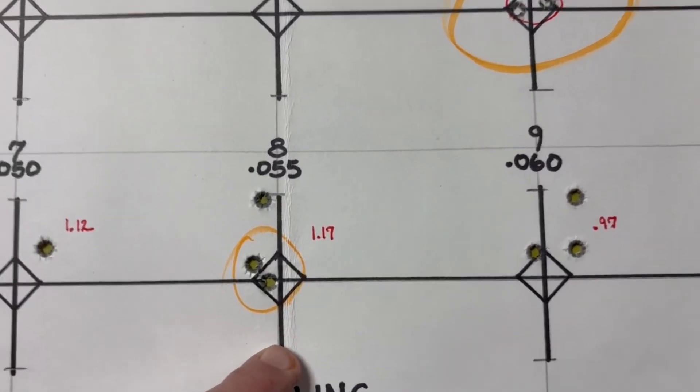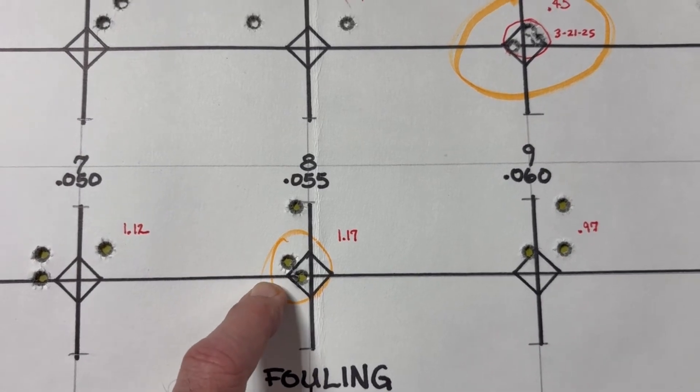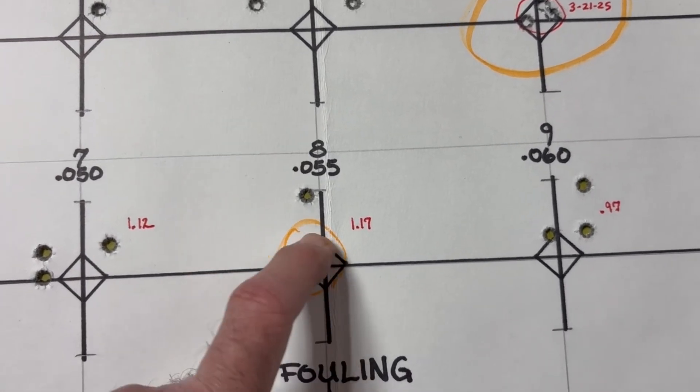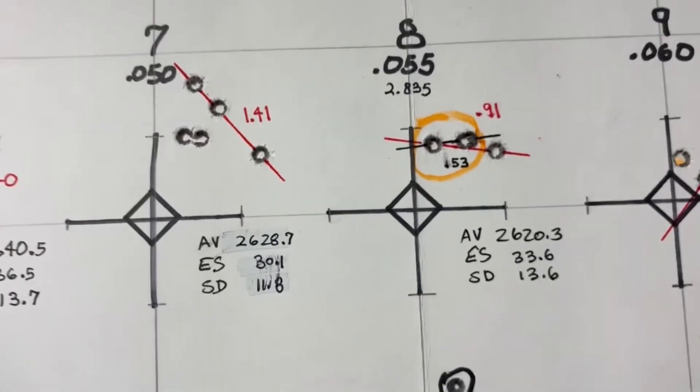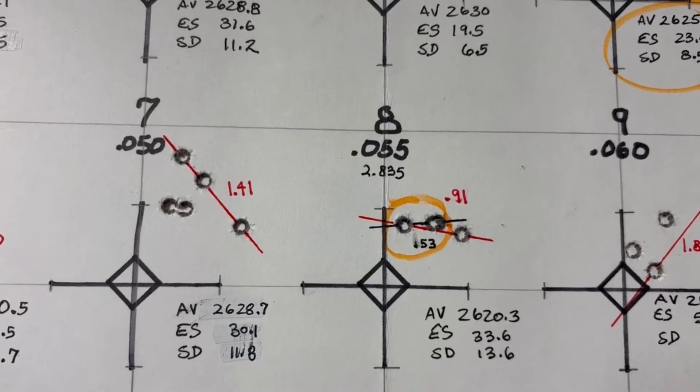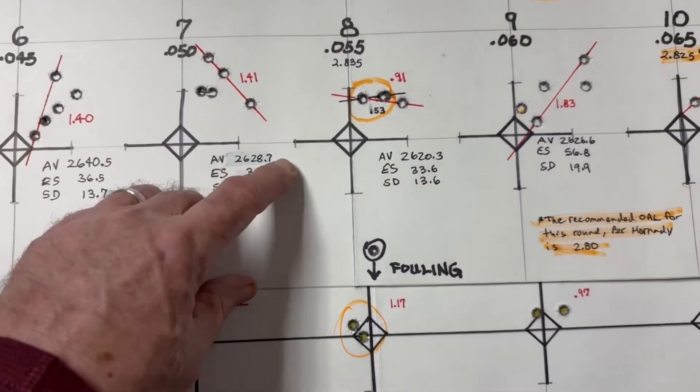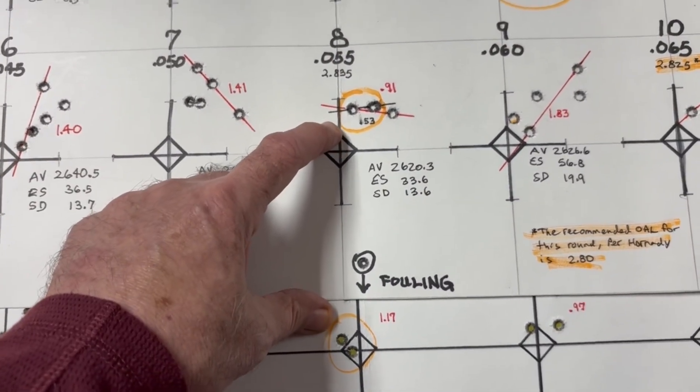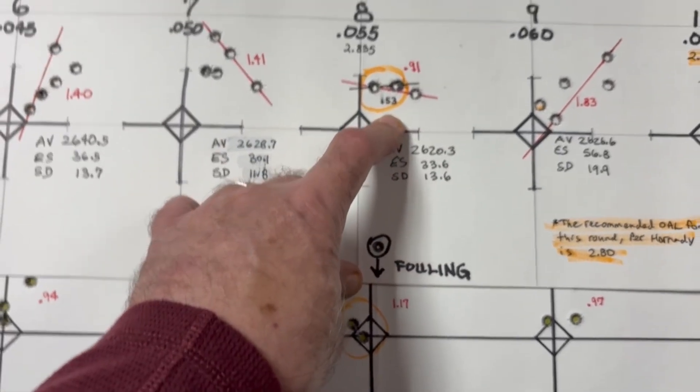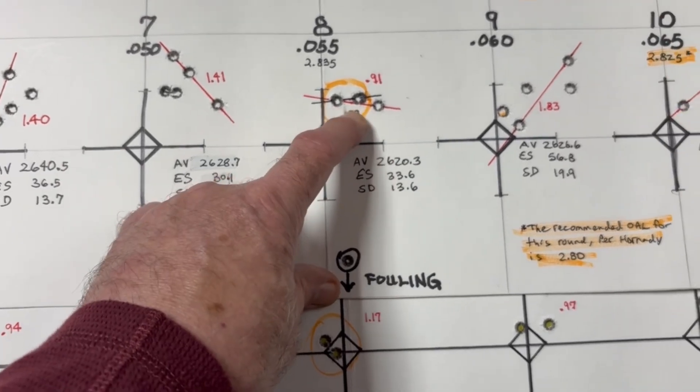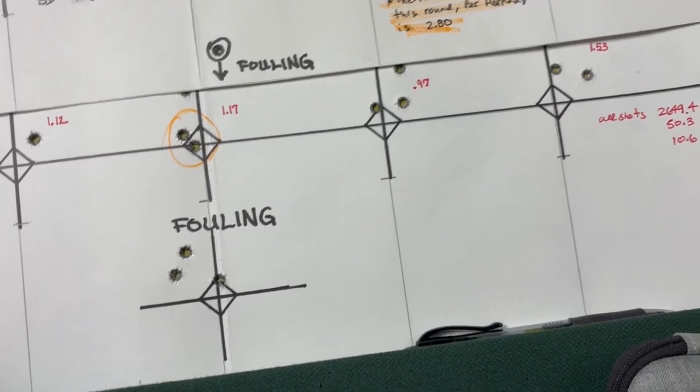This one was notable, target number eight from three weeks ago. We're at 1.17 inches, and we had two clustered together right here with a flyer off that was kind of high. And then today, once again, we have a clustering right here together. Even though this was a 0.91 inch group and a 0.53 best four out of five, some similarity there that I see.